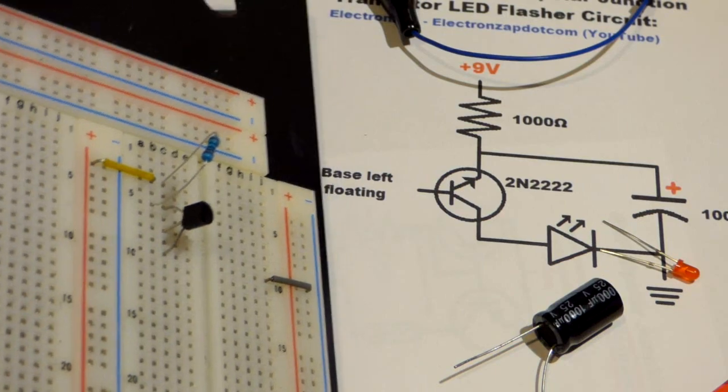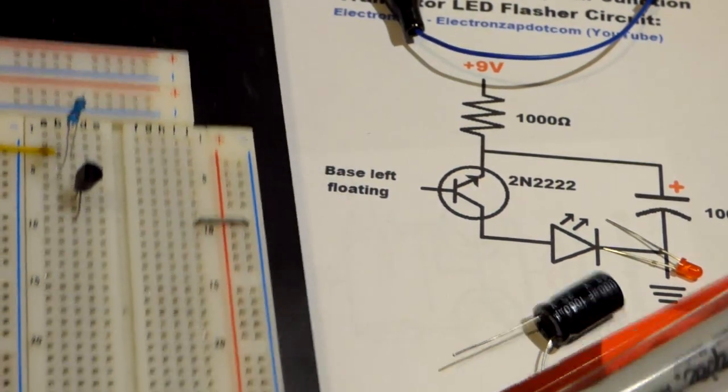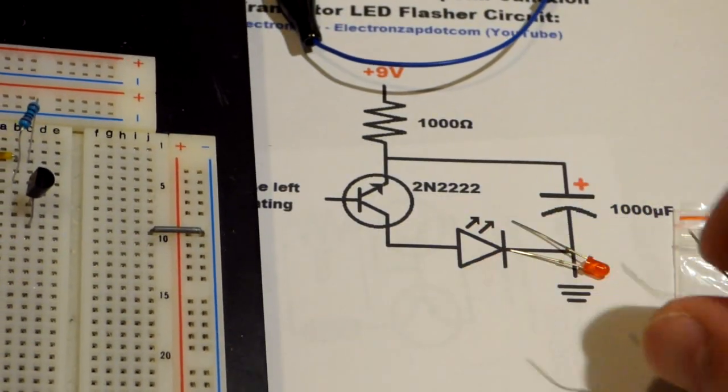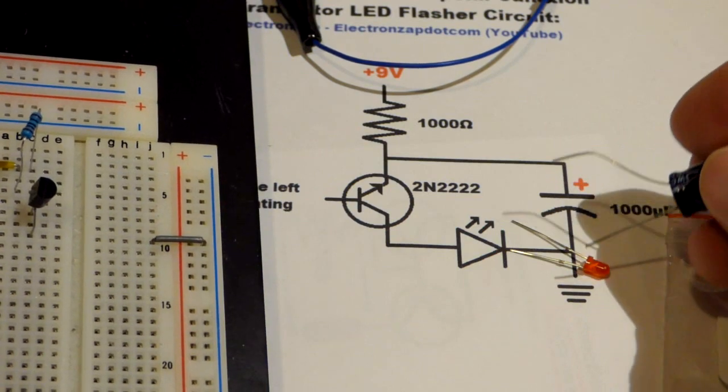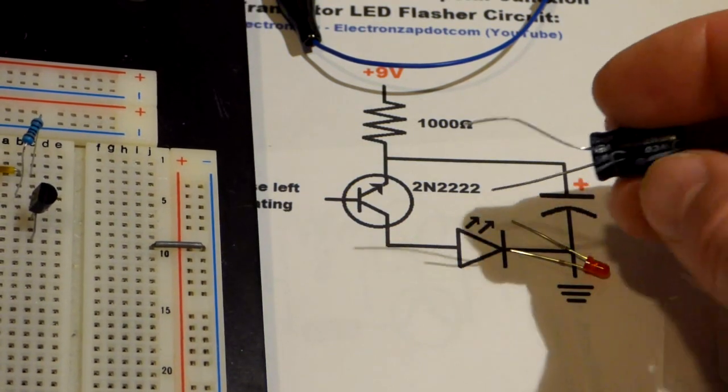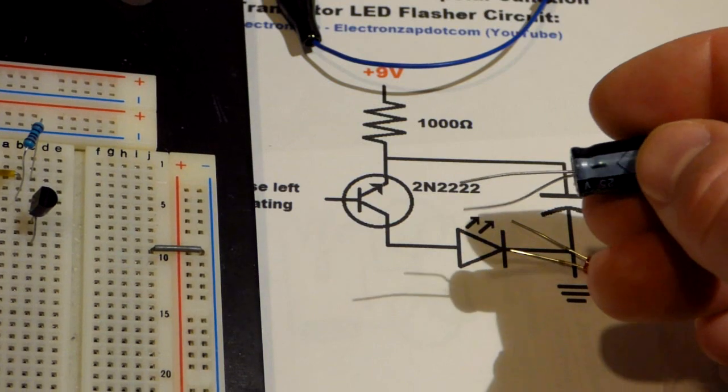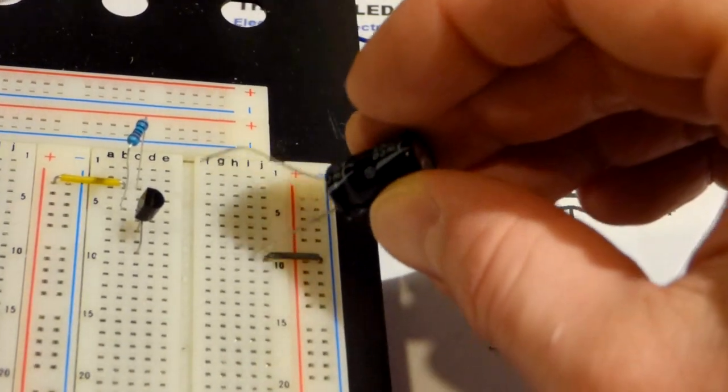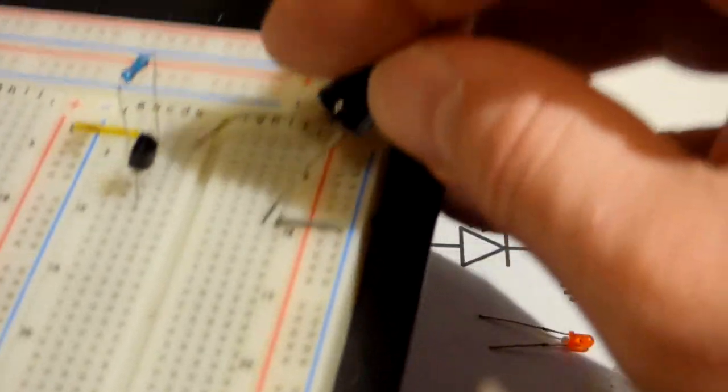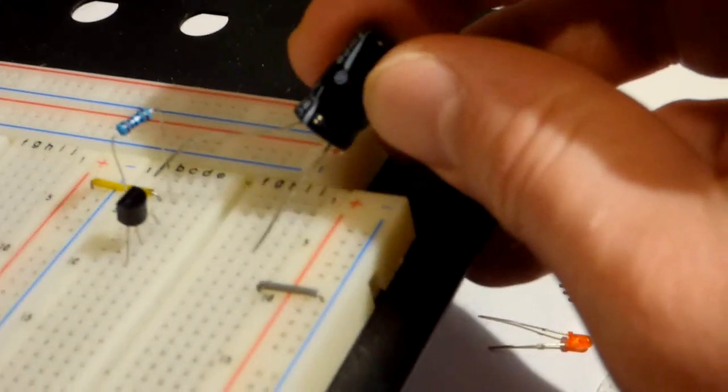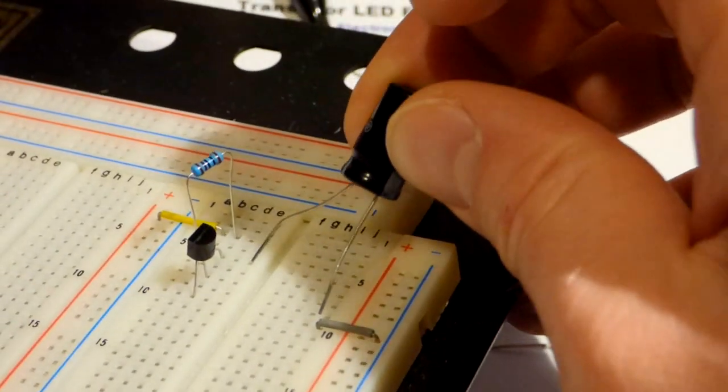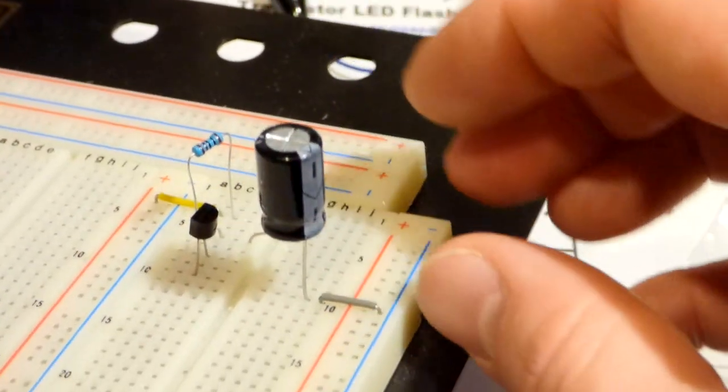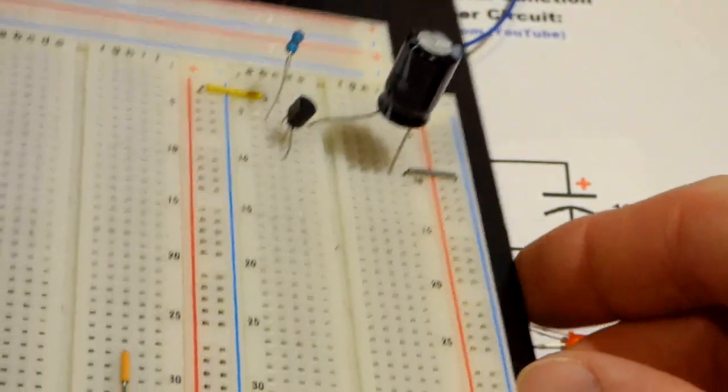So the electrolytic capacitor is a 1000 microfarad electrolytic capacitor there. The long lead is the more positive side, the short lead is the more negative side. It's a polarized capacitor. The short lead we're going to put to ground, and then the long lead we're going to put into the same row as the emitter of the transistor and where the resistor come together. There you go.